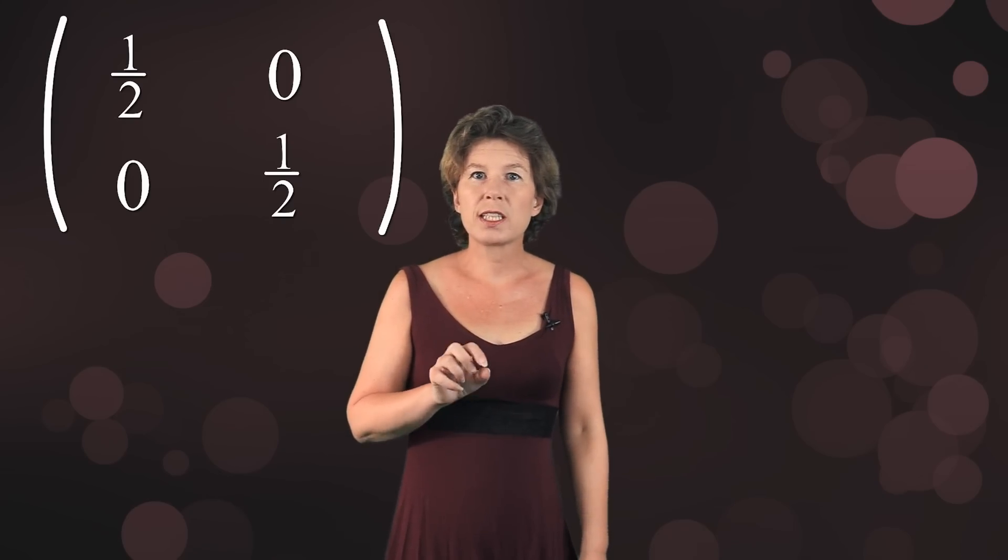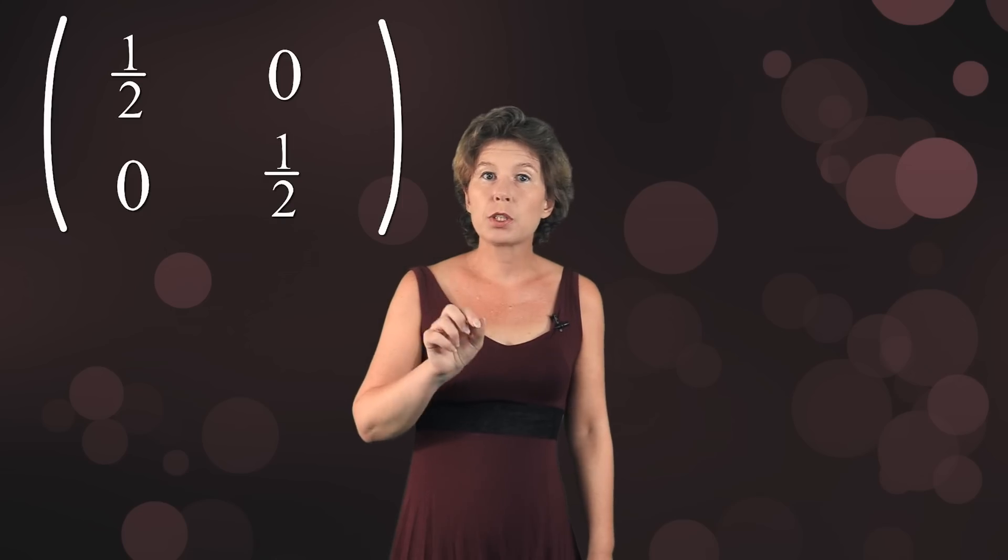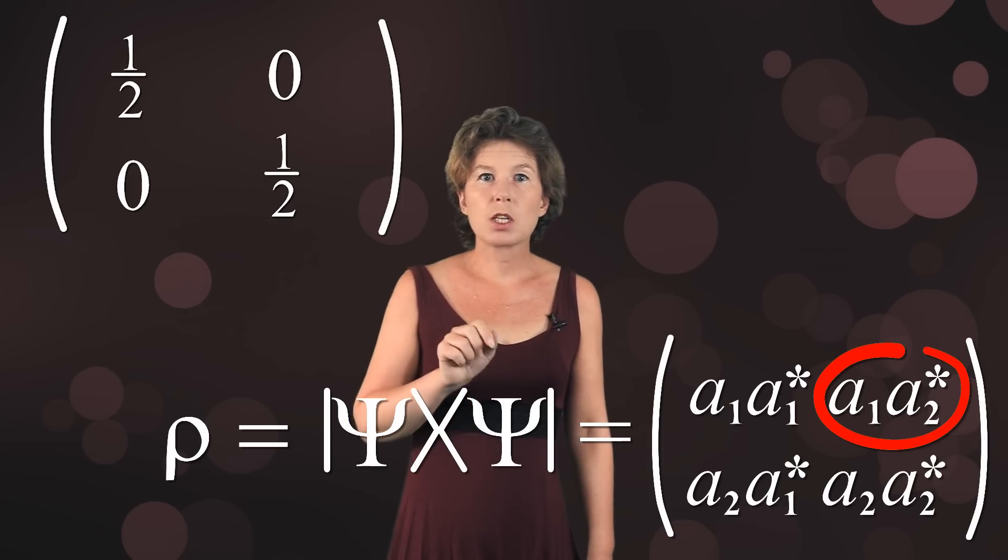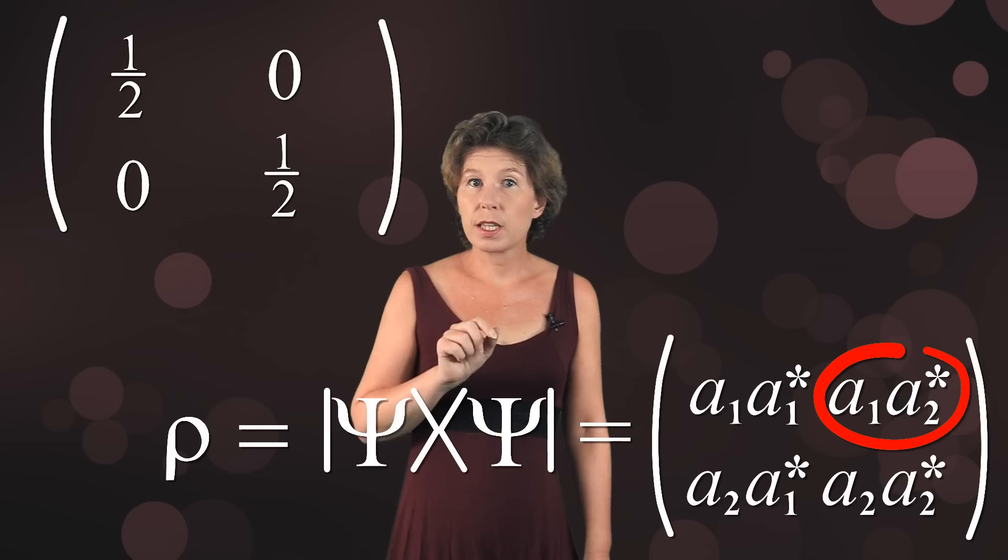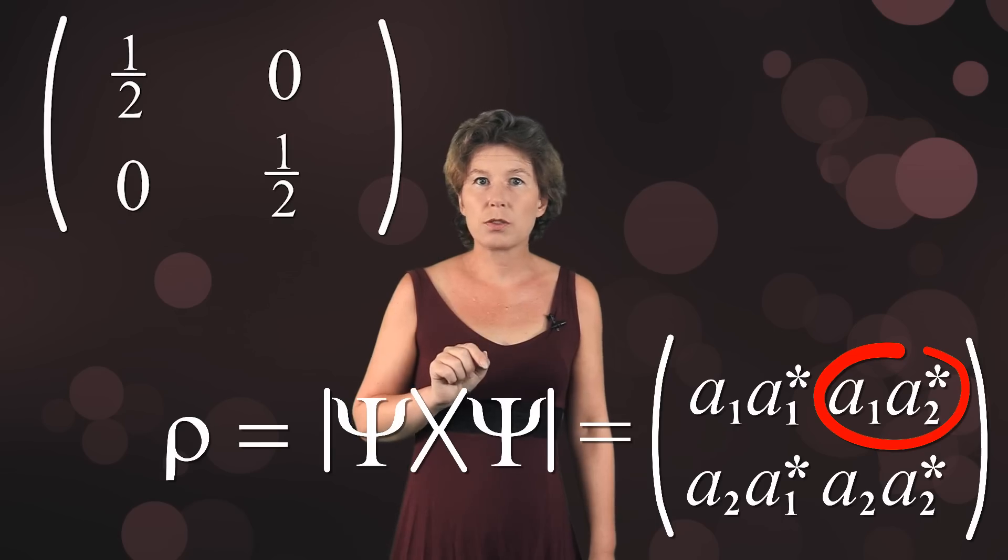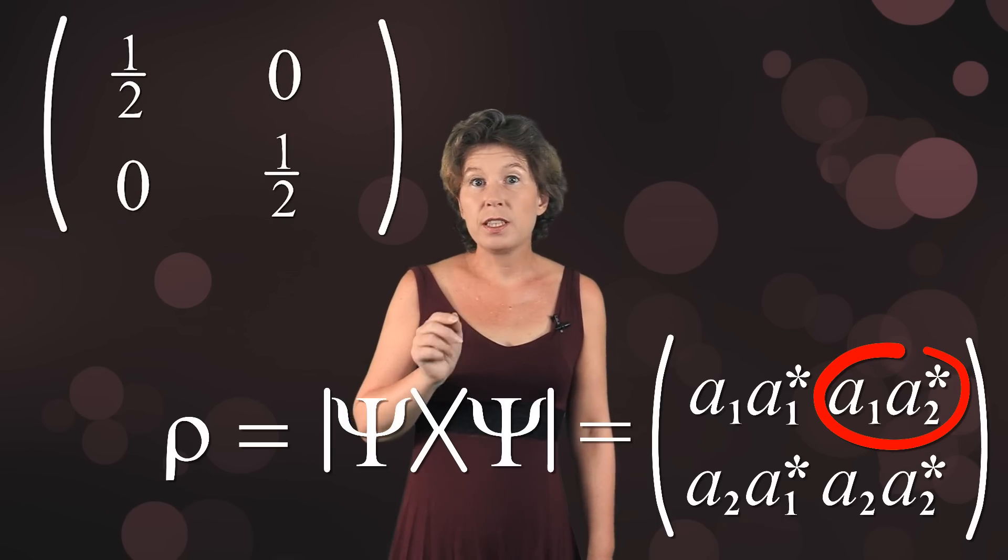To see this, look again at the density matrix for an arbitrary wavefunction in two dimensions. Now take for example this off-diagonal entry. If this entry is zero, then one of these coefficients has to be zero, but then one of the diagonal entries is also zero, which is not what the decohered density matrix looks like.